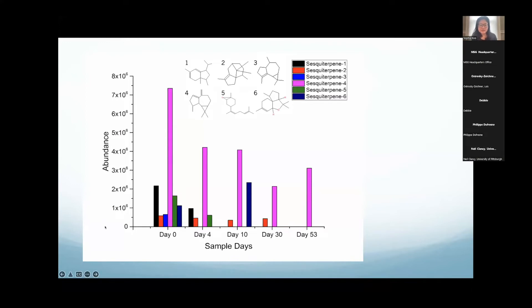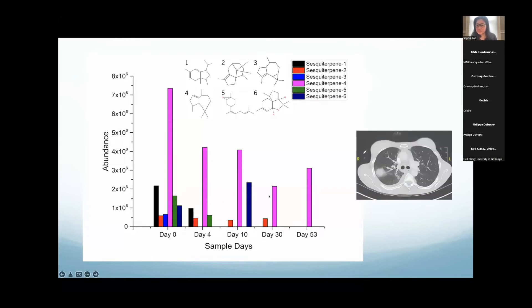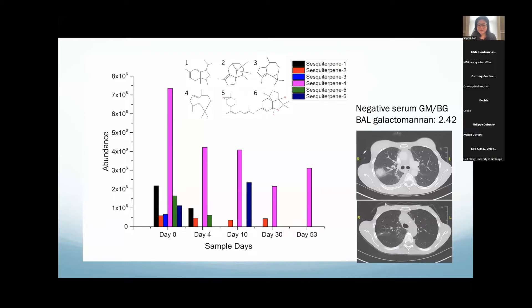This is a patient who, on day zero, after having leukemia and an invasive fungal infection, came in with fevers and had a chest CT showing a large right upper lobe mass. Her serum galactomannan and beta-glucan were both negative, but she had a positive BAL galactomannan. On day zero she had a complex bouquet of about six different sesquiterpene molecules in her breath. With voriconazole it gradually dissipated over time, and after day 53 we couldn't see it further in this patient's breath as she clinically improved in parallel with her CT improving as well.